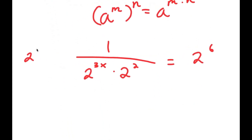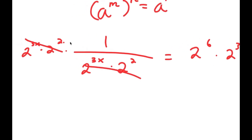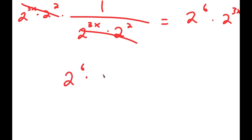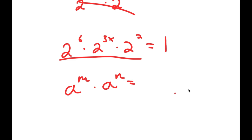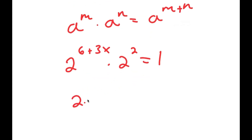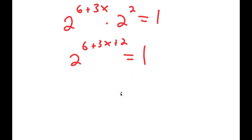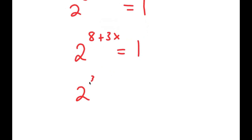I can multiply both sides by 2^(3x) times 2 squared. When those terms cancel, I'm left with 2 to the power of 6 times 2^(3x) times 2 squared equals 1. Because all powers share the same base, using the rule a^m × a^n = a^(m+n), I get 2^(6+3x+2) = 1, and since 6 plus 2 is 8, I get 2^(8+3x) = 1, rewritten as 2^(3x+8) = 1.